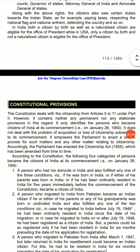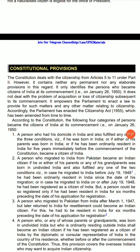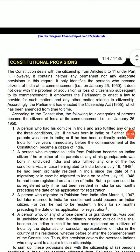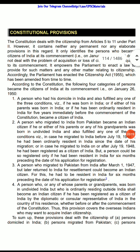The constitution deals with citizenship from Articles 5 to 11 under Part 2. However, it contains neither any permanent nor any elaborate provisions in this regard. It only identifies persons who became citizens of India at its commencement, that is, on January 26, 1950. It does not deal with the problem of acquisition or loss of citizenship subsequent to its commencement. It empowers Parliament to enact a law to provide for such matters and any other matter relating to citizenship.